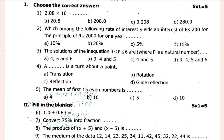2.08 multiplied by 10. Which among the following is the rate of interest? Interest of Rs.200 for the principal of Rs.2000 for 1 year. The 3rd one is the solution of the unique equation. The 4th one is the dash — turn about the point. The 5th one is the sum of 1st to 15 even numbers is dash.